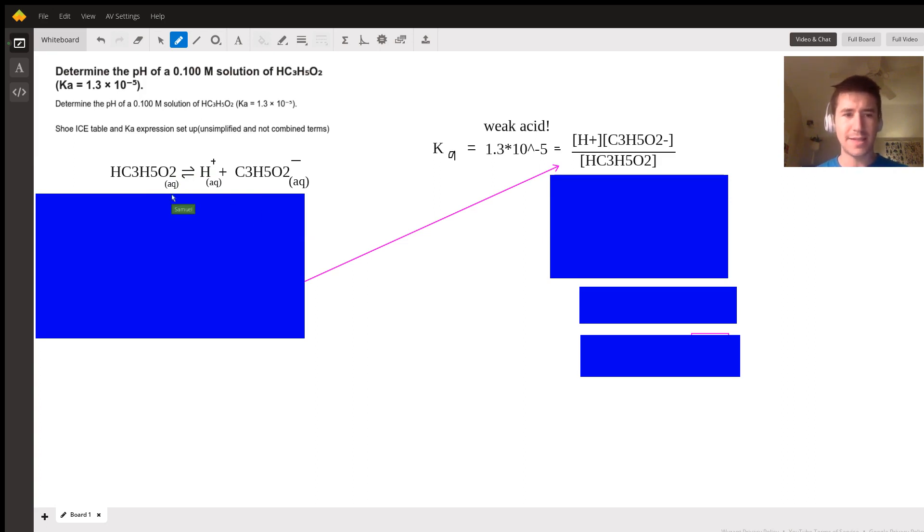From there, we can maybe start setting up our ice table. And some students I've heard actually call it a rice table because it's a reaction and then ICE initial change equilibrium. The initial was given to be 0.1 molarity and I kept the zeros to preserve our sig figs. Of course, we can assume that there's next to no protons floating around. I mean, there are some in water, but negligible and none of our conjugate base.